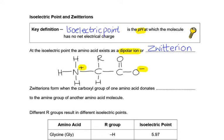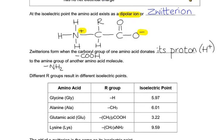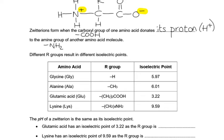Zwitterions form when that carboxylic acid group, that's our COO group of one amino acid, donates its proton, its H+, to the amine group, the NH2, of another amino acid molecule in our beaker. So let's have a think about our different R groups and their different pHs at which they are electrically neutral, their isoelectric points.